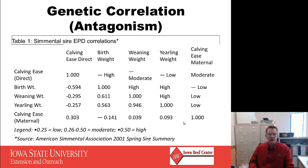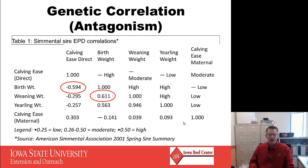This graph comes from the Simmental sire summary. The correlation between birth weight and calving ease direct is very negative — as birth weight goes up in pounds, calving ease direct goes in the opposite direction. On the contrary, weaning weight and birth weight have a positive correlation of about the same level on the other side of zero. So if we're selecting against birth weight we're also selecting against weaning weight, which can be contrary to what we want our cattle to do. Calving ease direct is therefore the number one trait to look at.